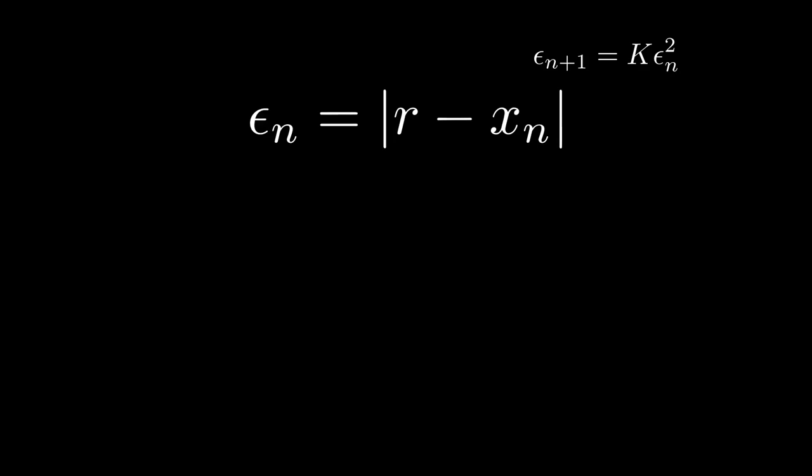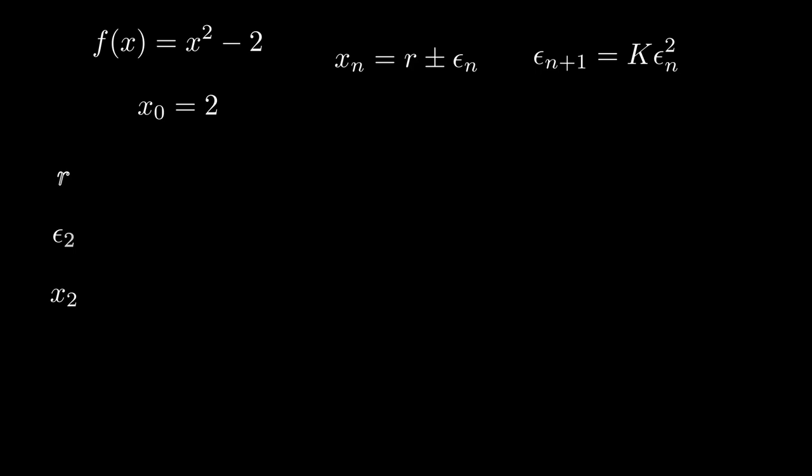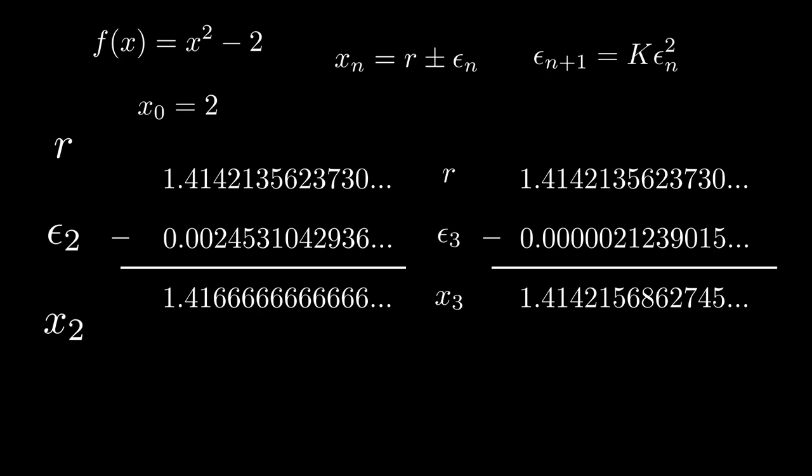Coming back to how we defined error in the first place, we can rearrange this equation to get that our guess, xn, is equal to the root we desire, plus some error term. Let's write it out with the same example function to make it easier. x squared minus two with the initial guess x zero equals two. Here, we have the root of the function subtracted by an error equals the guess for the root of the function. I arbitrarily chose the values of our guess after two and three iterations of the Newton method because it conveniently fits on the screen.